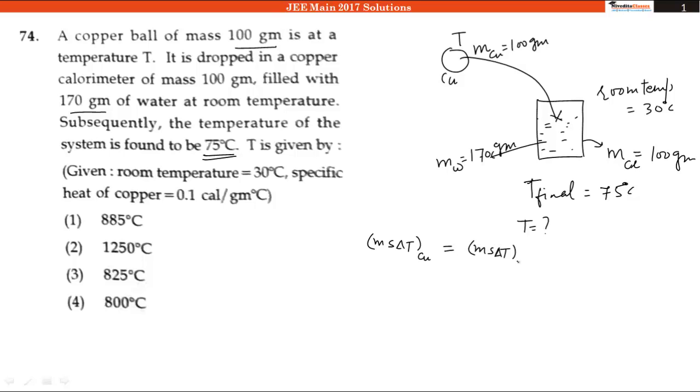Mass of copper is 100 grams, and the specific heat of copper is 0.1. What is the temperature difference? It is coming from capital T minus 75, because the final temperature of the system is 75.